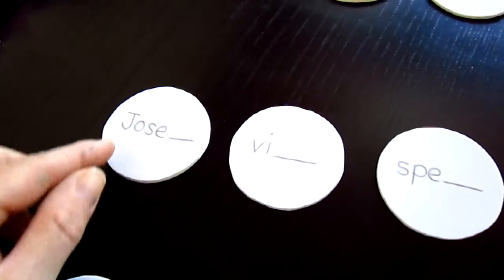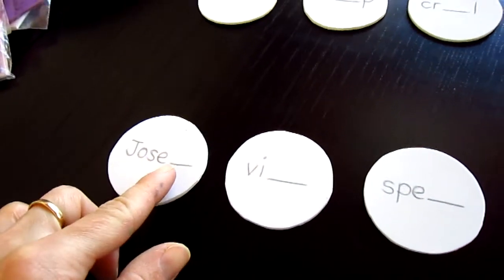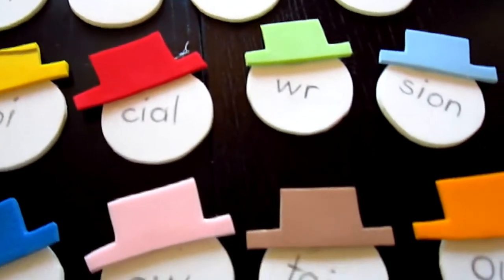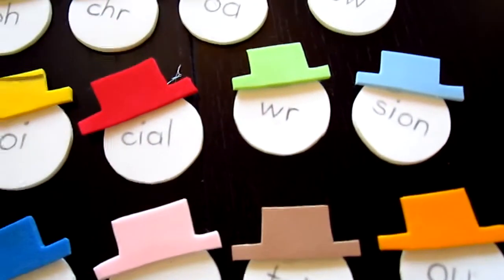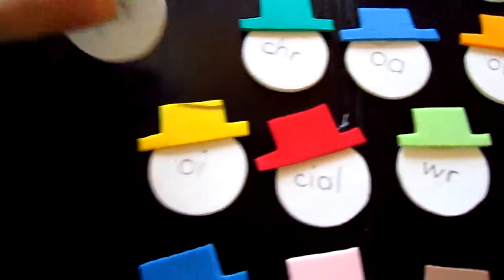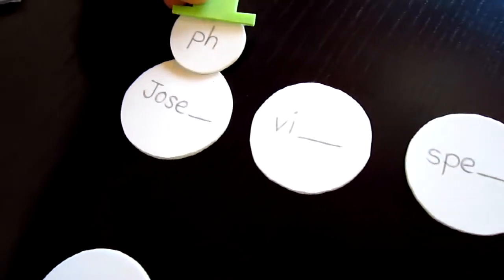For example, Joseph. So they'll look for their sound here. Joseph. Here it is. So we'll put the little head on top of the snowman.